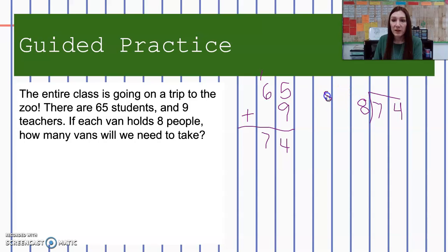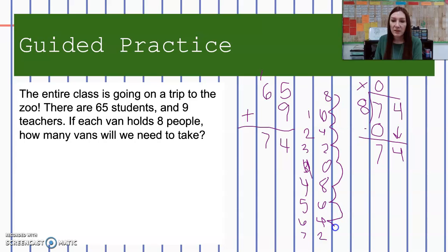I'm going to list my multiples of eight: 8, 16, 24, 32, 40, 48, 56, 64, 72. Eight cannot divide into seven, so eight times zero is zero. Seven minus zero is seven. Bring down the four. Let's see how many times eight can divide into 74. I can go 1, 2, 3, 4, 5, 6, 7, 8, nine times. Nine times eight is 72. 74 minus 72 is going to leave me with two, so I have a remainder of two. This means that I need nine vans and then I have two people who are left.